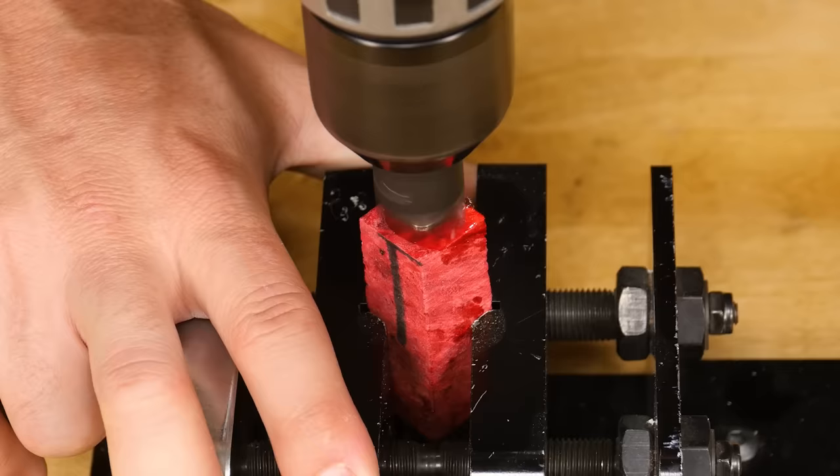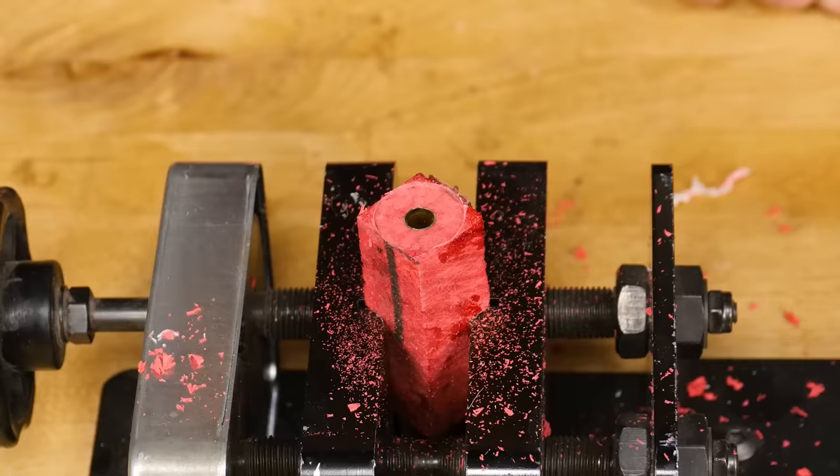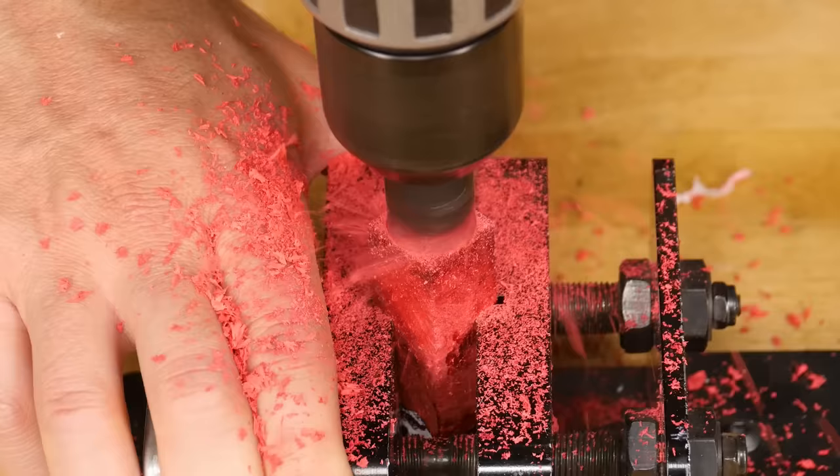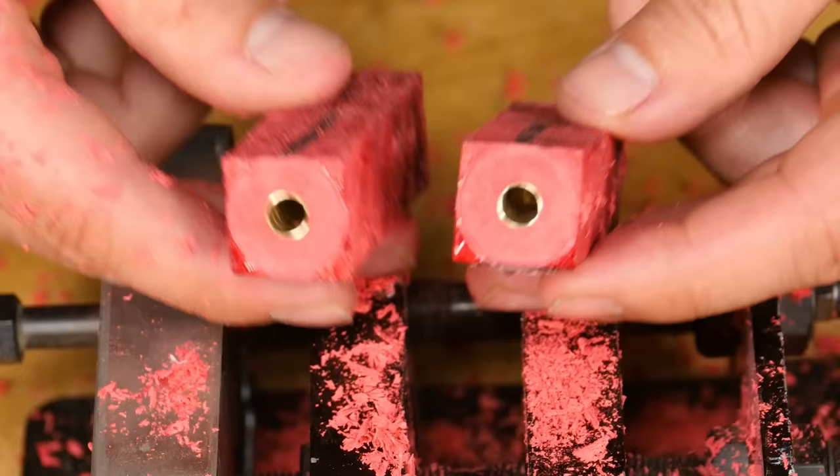Hold the blank in a vise while lightly cutting just until the tube is revealed. Don't cut too far or the pen will be too short which will cause problems during assembly. Repeat with the second blank and when you're finished the blanks should look like this.